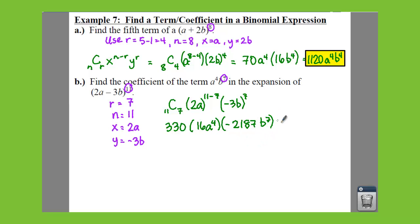And so your term, well, we actually have like your a to the 4th and your b, but we don't really care about that so much. We need to take 330 times 16 times negative 2,187. So that gives you a small number of negative 11,547,360.